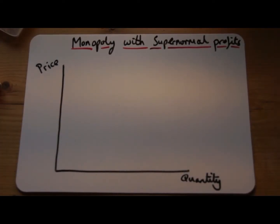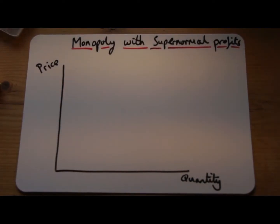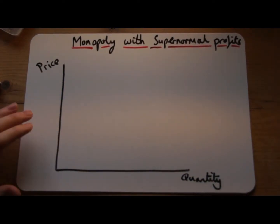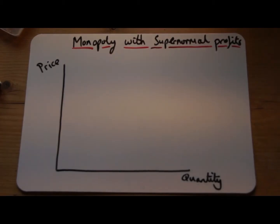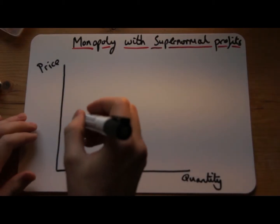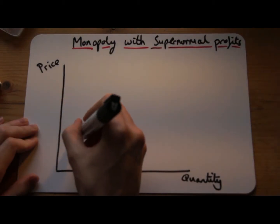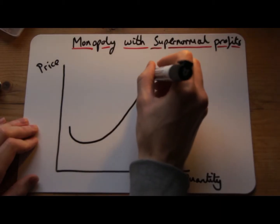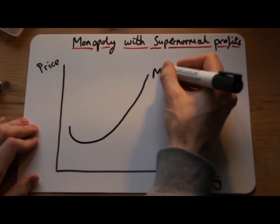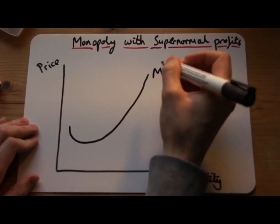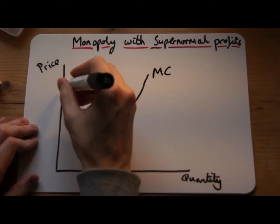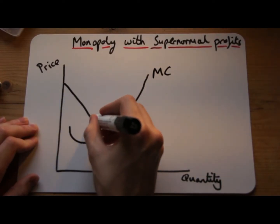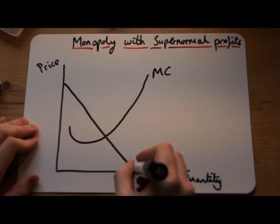This is a how-to guide on drawing a monopoly market structure with supernormal profits. The first thing to draw is the marginal cost line — remember it's a U-shape — and the marginal revenue line.